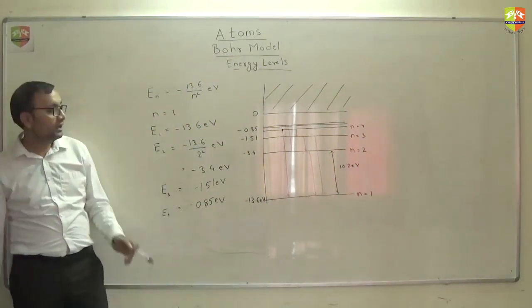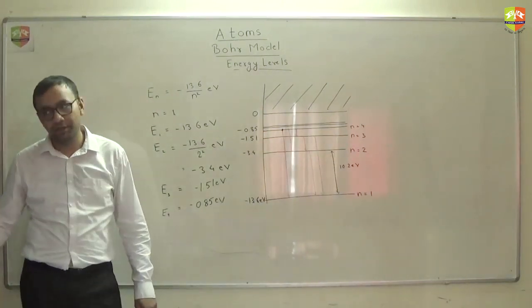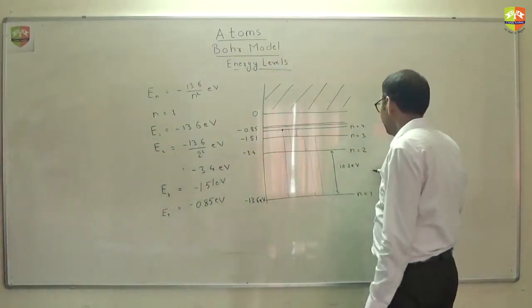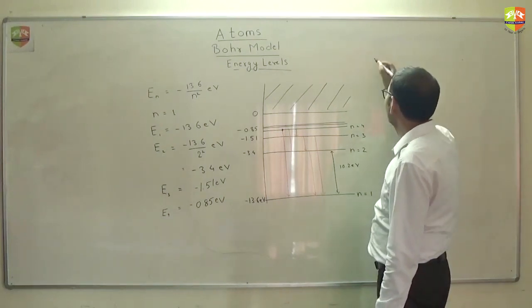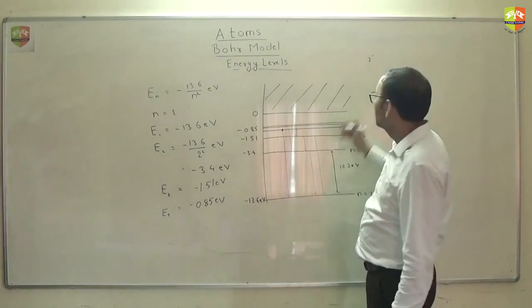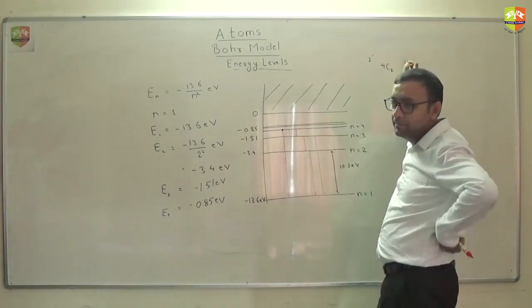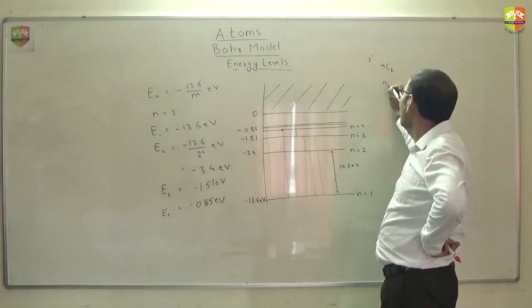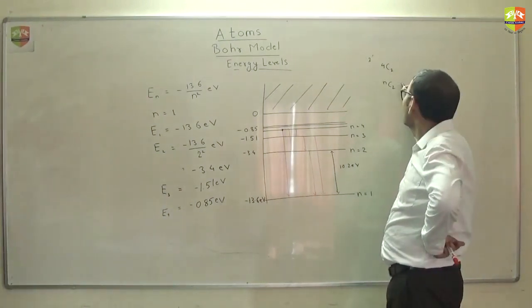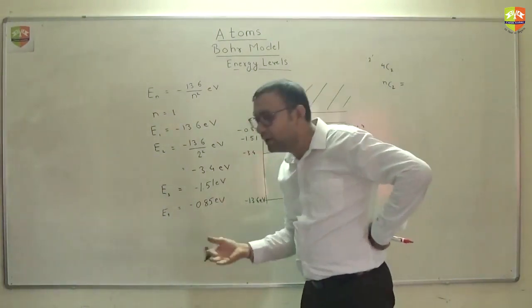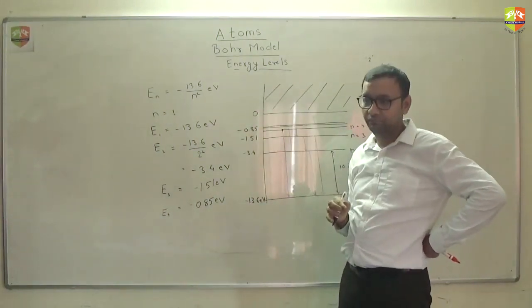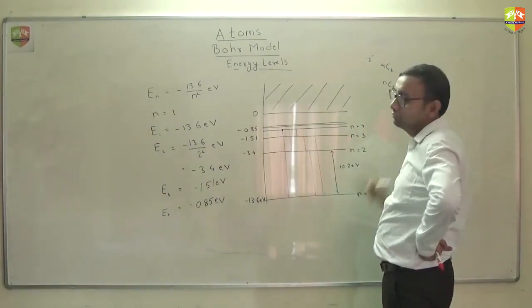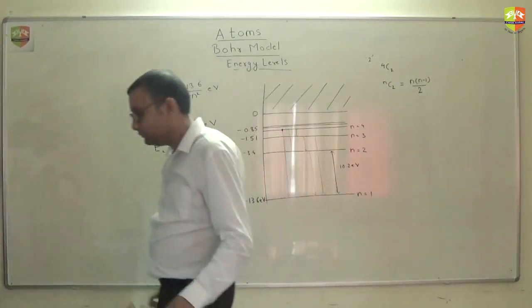So you can see 6 wavelengths can be emitted if electron is at n equal to 4 excited state. In fact, when electron is at n equal to 4, it means what? You can choose out of 4, you can choose any 2. Transition will happen. So basically if you just know how many wavelengths are getting emitted, you will be able to find out which excited state it is in. So this will be equal to n into n minus 1 divided by 2. Any doubts till now?